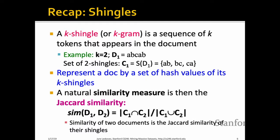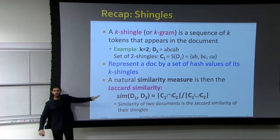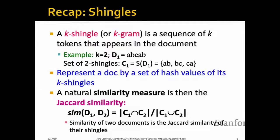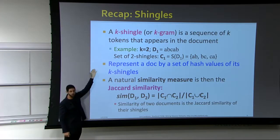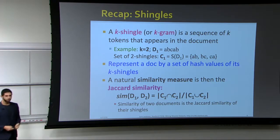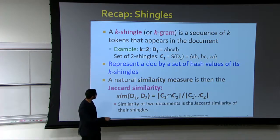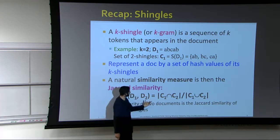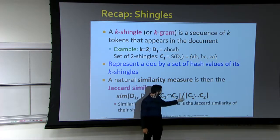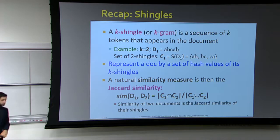The natural similarity measure we've been using is Jaccard similarity. Given two documents C1 and C2, we take the intersection of their shingles and divide by the union of all shingles. This intuitively tells you how many shingles two documents have in common — and this is the similarity measure we'll be using throughout.